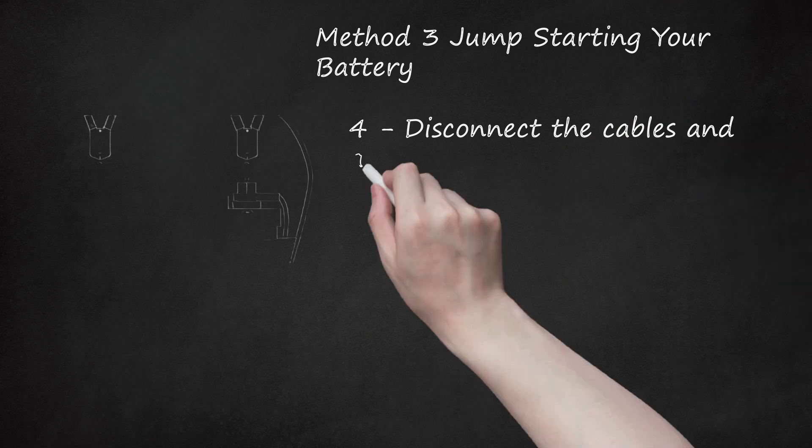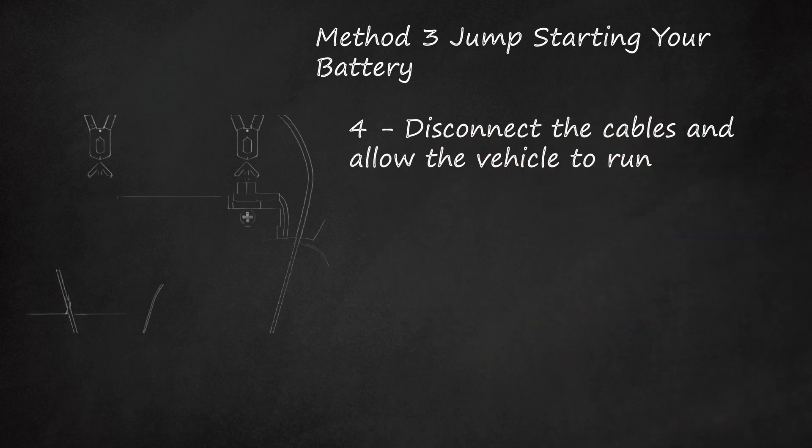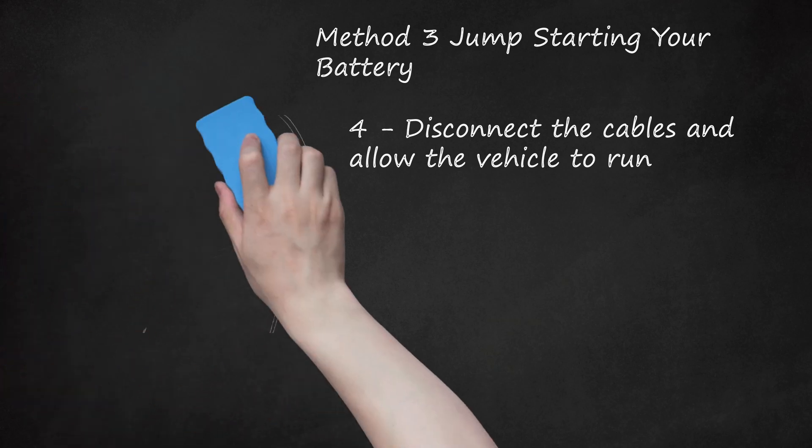Disconnect the cables and allow the vehicle to run. Once the vehicle starts, you can disconnect the jumper cables from each vehicle. Allow the vehicle that had a dead battery to continue to run for a bit. You may have charged the battery enough to start the vehicle, but if you turn it off right away, there may not be sufficient electricity to start it again. By letting it run, you give the vehicle's alternator an opportunity to charge the battery the rest of the way. If the vehicle dies once again after it is disconnected from the other car, check to make sure the battery is securely connected. If the vehicle runs well, take it out for a short drive to thoroughly charge the battery before turning it off again.